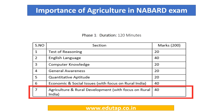Let us start by understanding the importance of agriculture in the NABARD examination and the weightage given to this section. As part of Phase 1, we see that 40 solid marks are from the agriculture and rural development section. Questions from this section amounted to only 25 marks in 2016, but in 2017 the marks were increased to 40, which shows us the growing importance of agriculture.